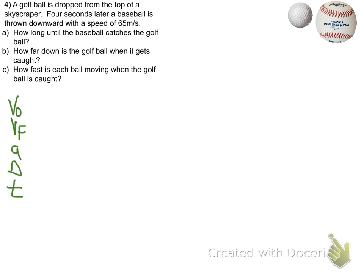It wants to know, we'll start out with how long until the baseball catches up to the golf ball. So we have our variables V0, V final, A, delta X, and T.